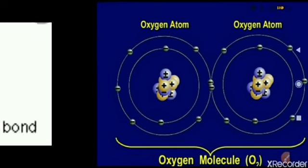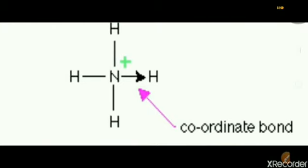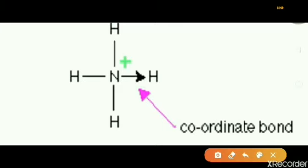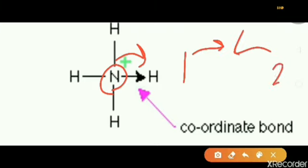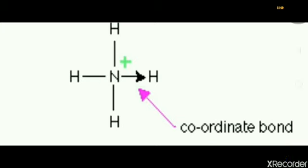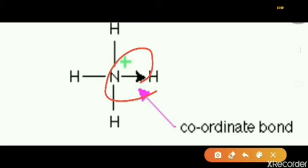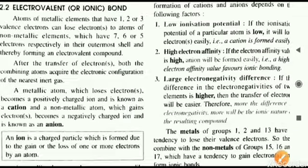Another kind of bonding is a subcategory of covalent bonding. In ordinary covalent bonding, one electron from each atom is shared equally. But in coordinate bonding, the pair of electrons comes entirely from a single atom — for example, nitrogen donates both electrons for sharing. The other atom takes the benefit without contributing any electron. This is called coordinate bonding, also known as dative bonding.